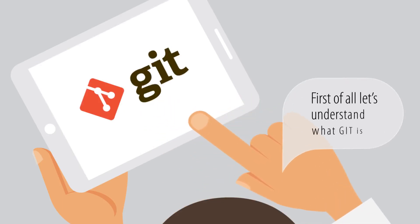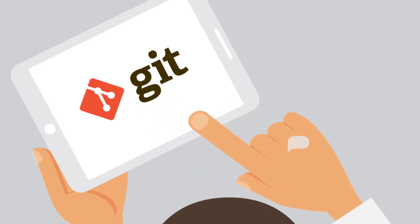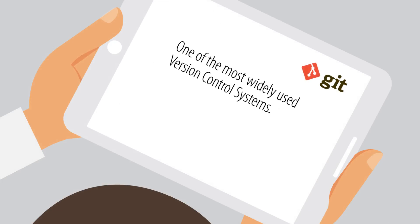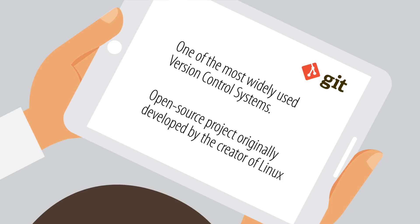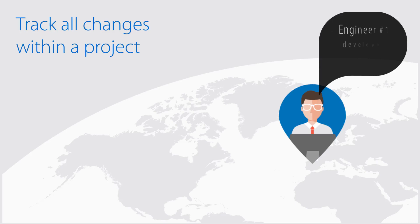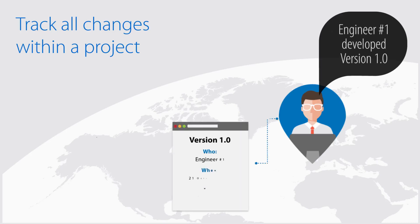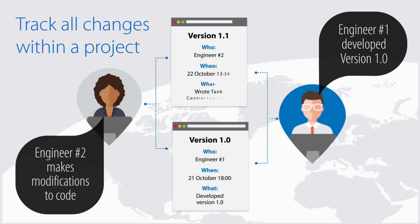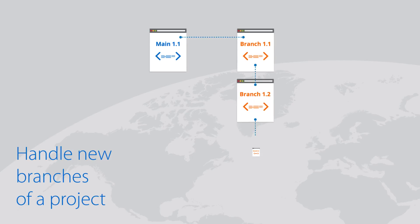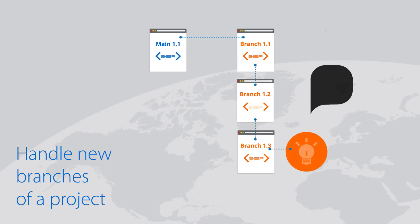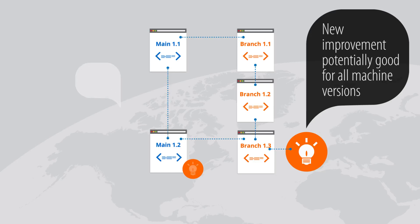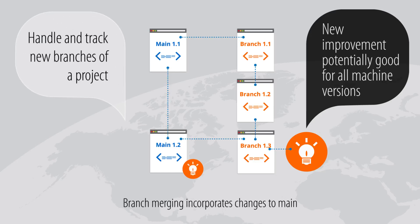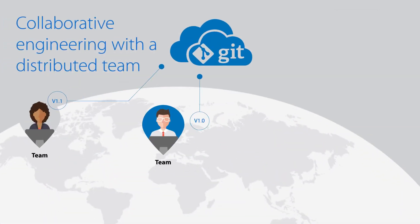Let's understand what Git is. One of the most widely used open source version control systems, Git lets you track all changes in the project and know who, when, and what changed. Handle new branches of a project, evolve them separately, and merge them again as you wish. Co-operate with large distributed teams.